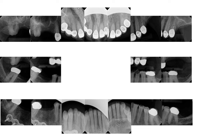Look at these two images — these are examples of rounded cone cut. Here at the school we use a rectangular collimator in order to prevent excessive radiation dose to our patient. But obviously in this example you can visualize that the rectangular collimator was not used.